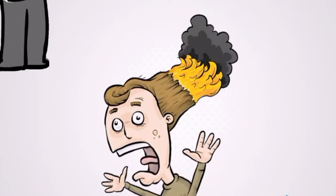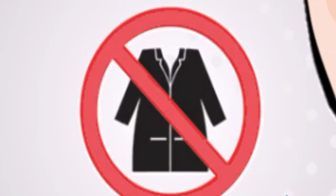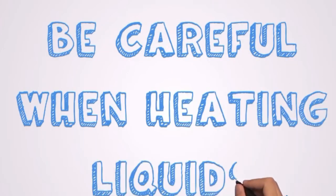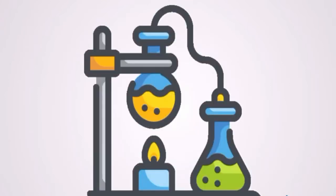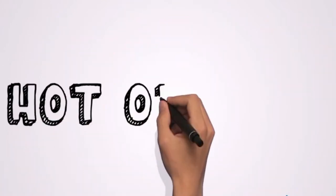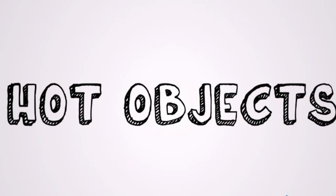Rule 5: Confine long hair and loose clothing in the laboratory. It may either catch fire or be chemically contaminated. Rule 6: Be careful when heating liquids. Add boiling chips to avoid bumping. Rule 7: Never put hot objects on the bench directly, but place on an asbestos board to cool.